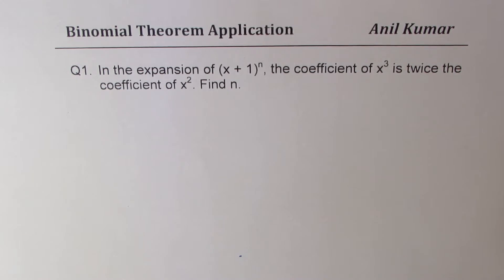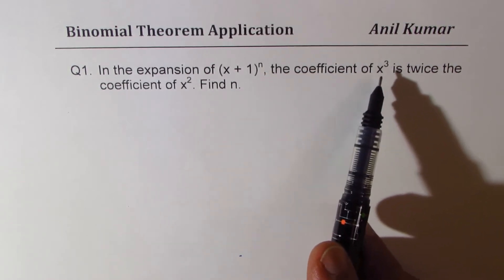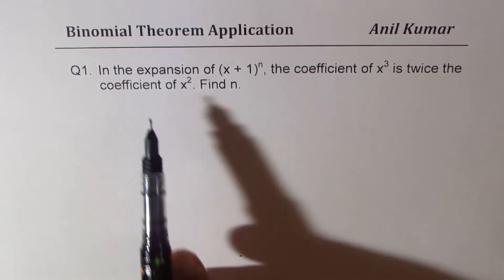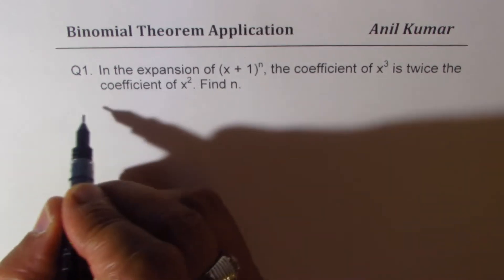The question number one here is: in the expansion of (x + 1)^n, the coefficient of x³ is twice the coefficient of x². Find n. So let us expand this.